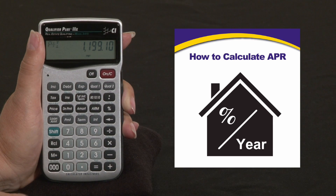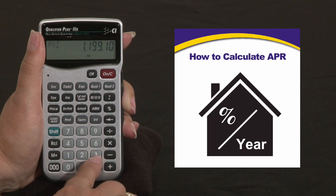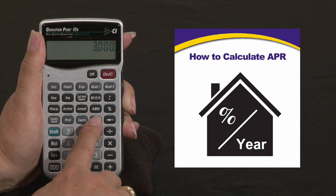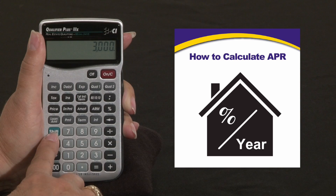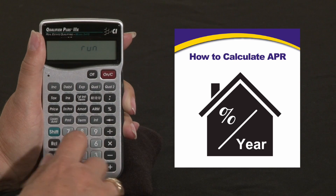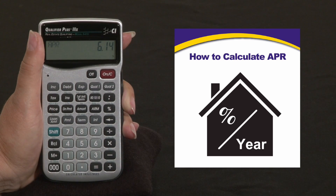This loan also comes with points and fees of $3,000. We're going to enter our $3,000 and then press shift interest to calculate the APR. It's going to run and that gives us our actual APR interest rate of 6.14.